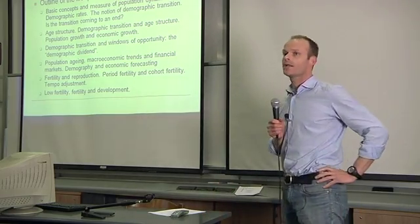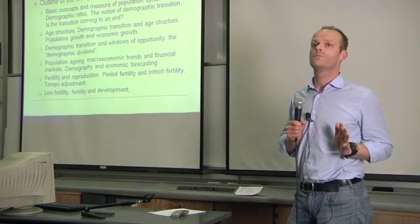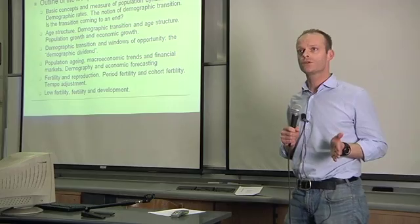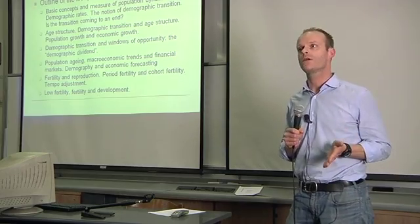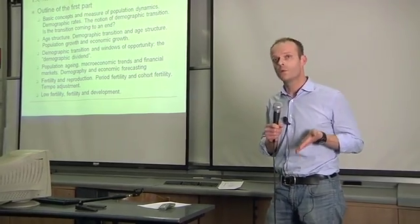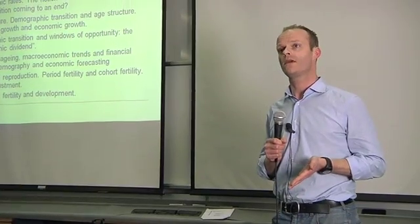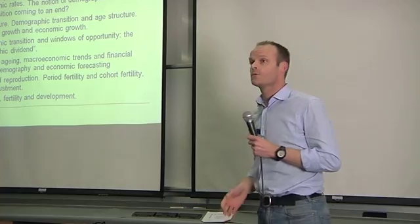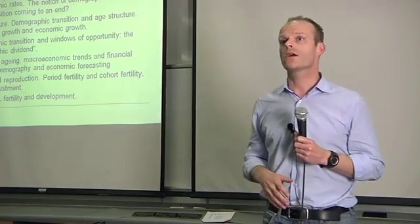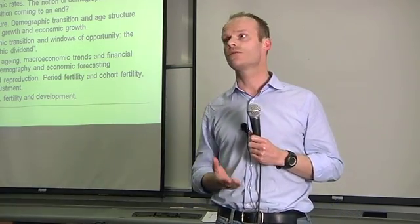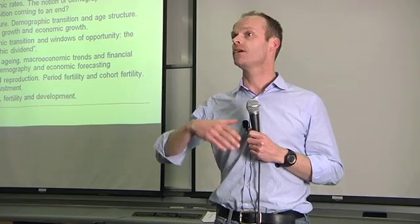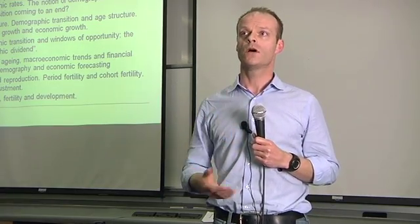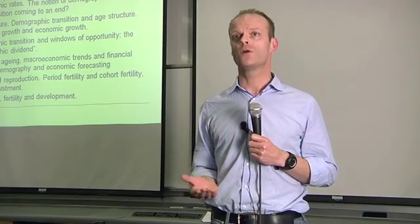We are going to take a little historical perspective, going back to the industrial revolution and thinking about how population processes were back then. We are going to talk about what's called the demographic transition — where countries make a transition from having very high fertility to very low, and high mortality to very low mortality.